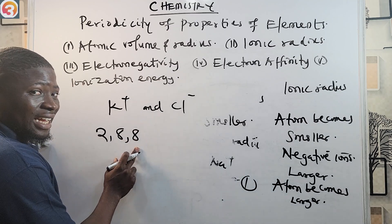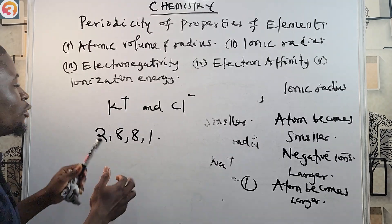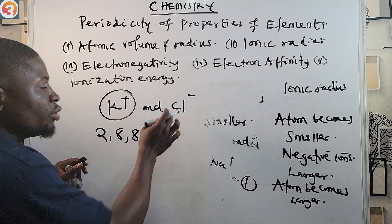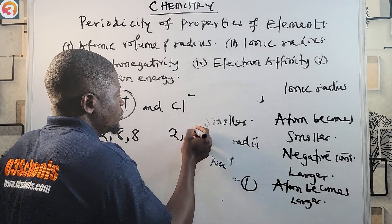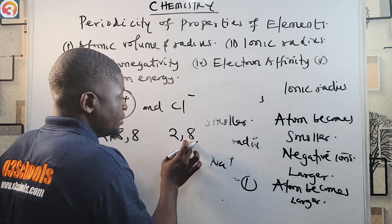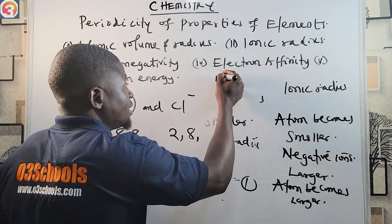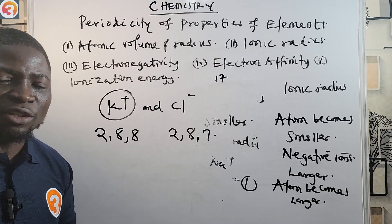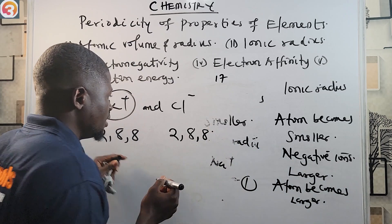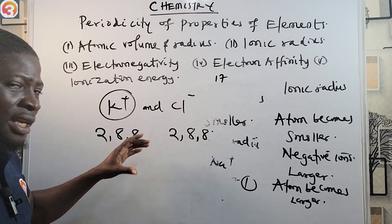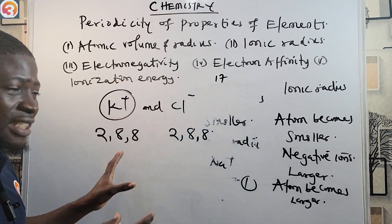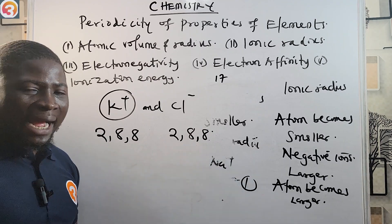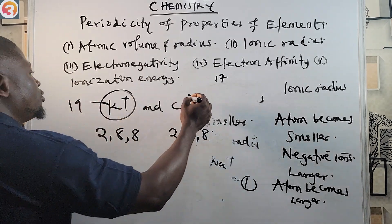For example, K⁺ and Cl⁻ have the same number of electrons. Potassium is the 19th element with configuration 2, 8, 8, 1 — it gives out one electron to become stable as 2, 8, 8, forming K⁺. Chlorine is the 17th element with configuration 2, 8, 7 — it gains one electron to become 2, 8, 8, forming Cl⁻.